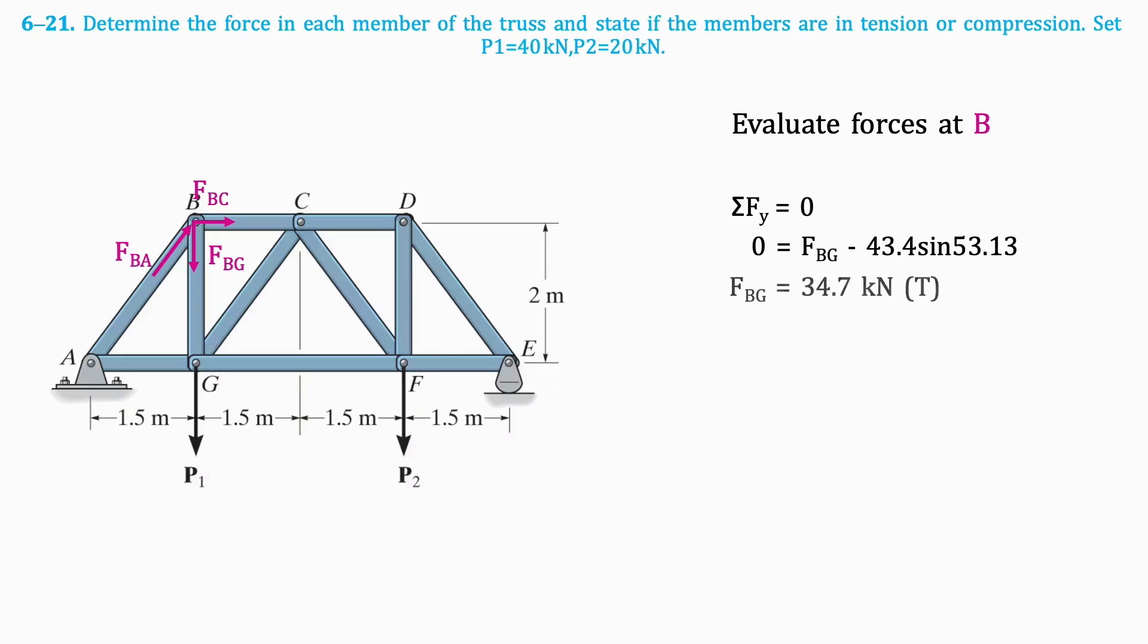Taking the sum of vertical forces gives that FBG is 34.7 kN in tension. Taking the sum of the horizontal forces gives that FBC is 26 kN in compression. So we must flip it on the free body diagram.